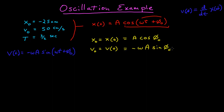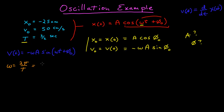I want to find A and phi naught. I also need omega, which is related to the period — that's the easy one. Omega equals 2π over the period, so that's 2π divided by 3/2, which gives 4π/3 radians per second.